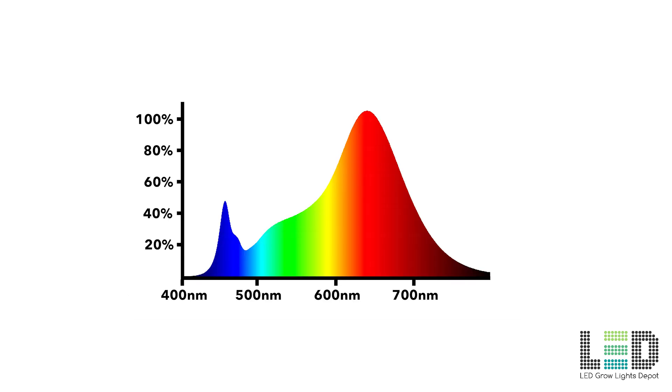There is some blue, a healthy dose of green, and a lot of red in the Electric Sky wideband spectrum. While the red peaks at 660 nanometers, there is a significant amount of energy in the 680 to 740 nanometer near infrared range.